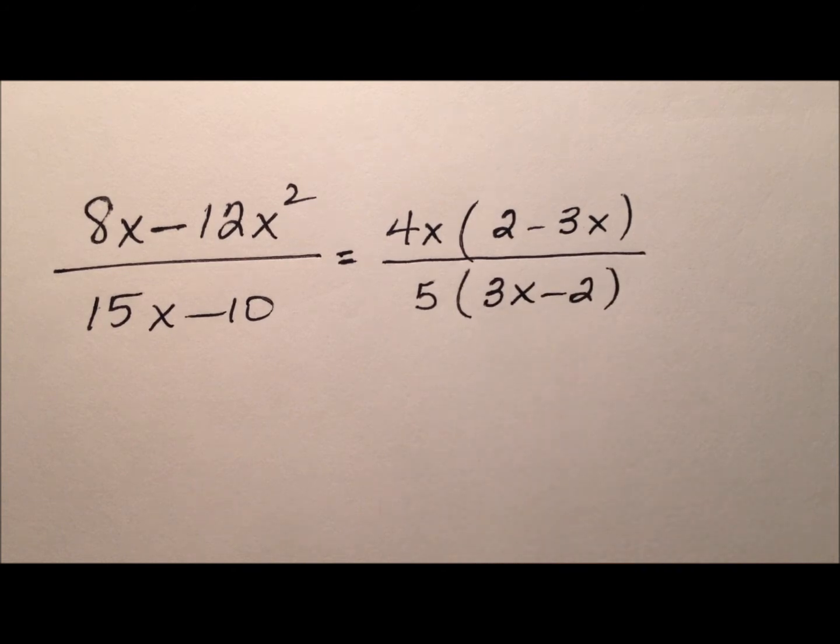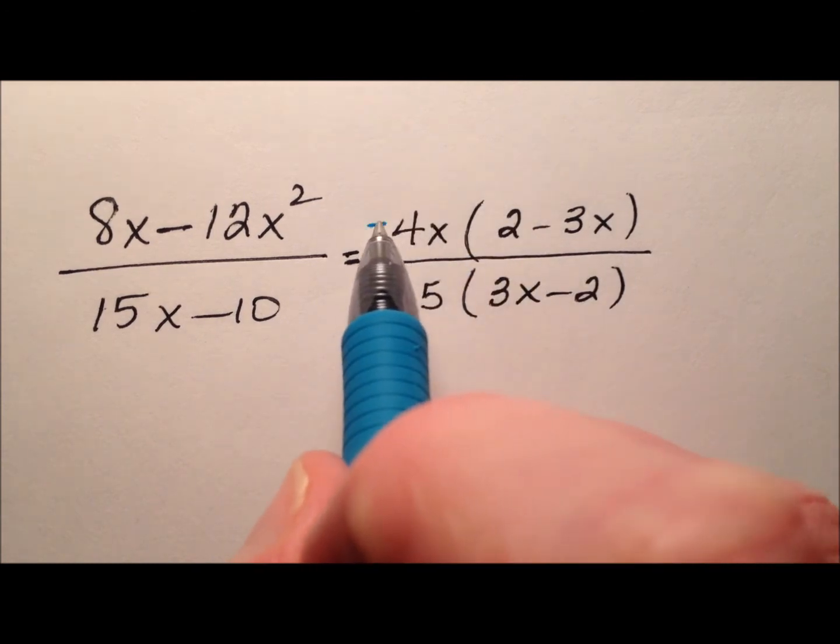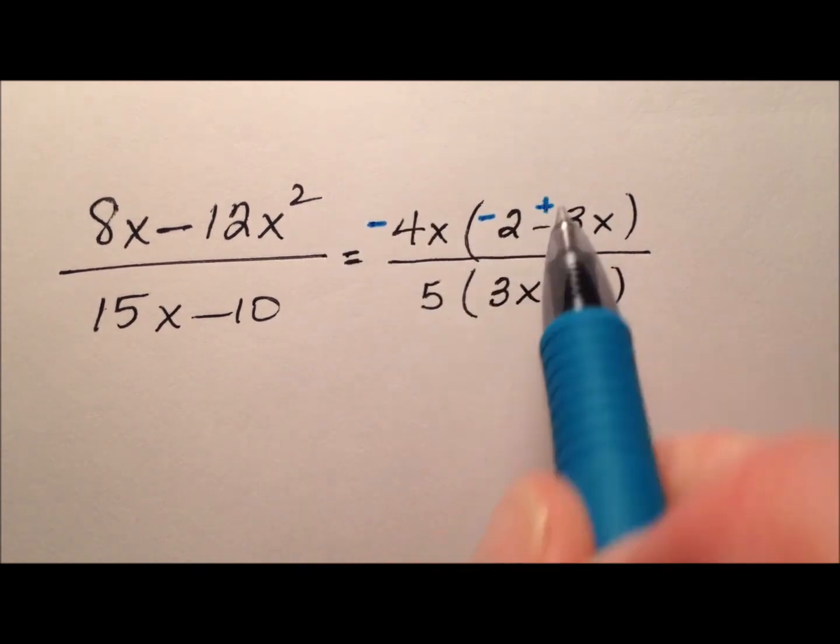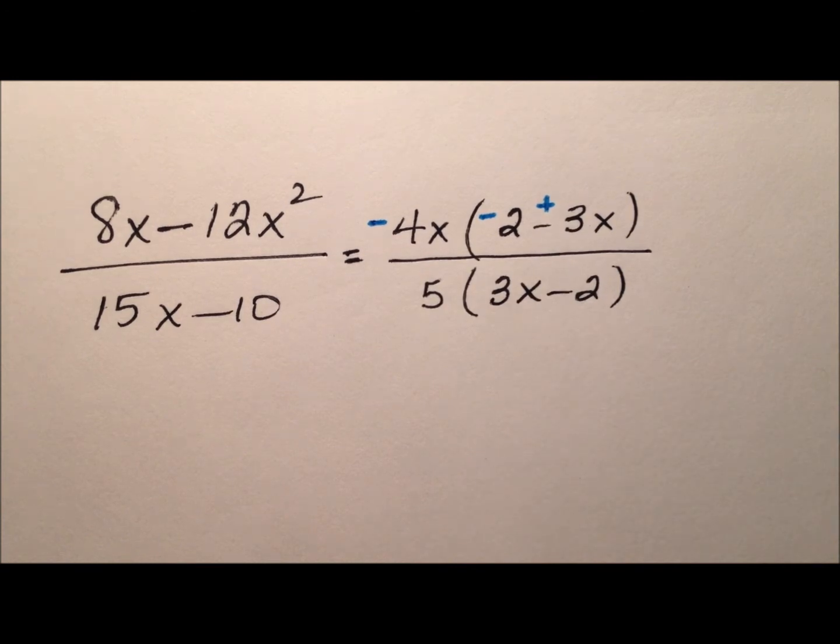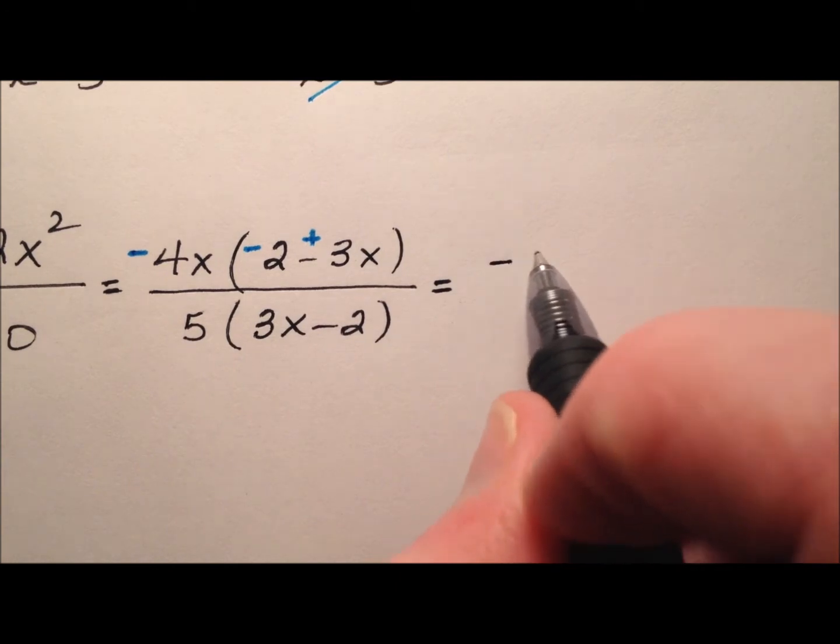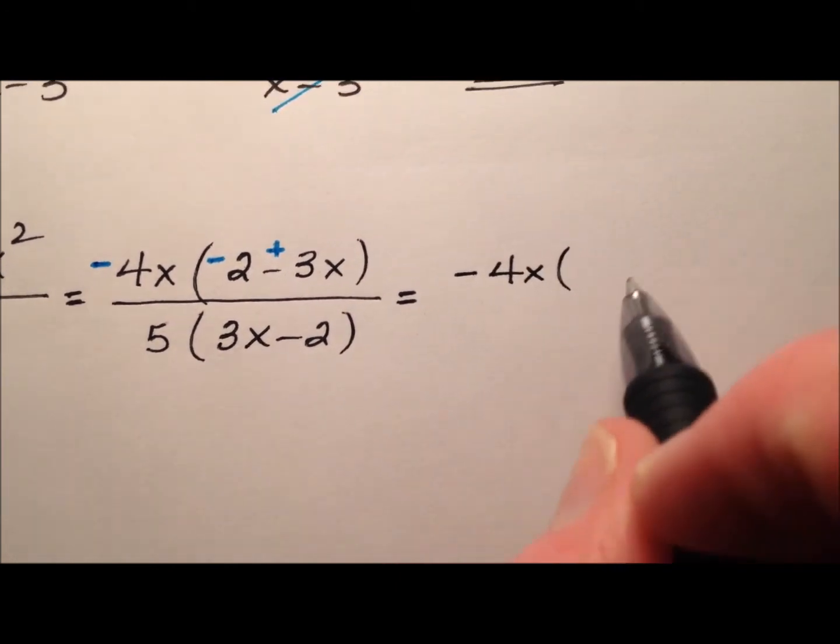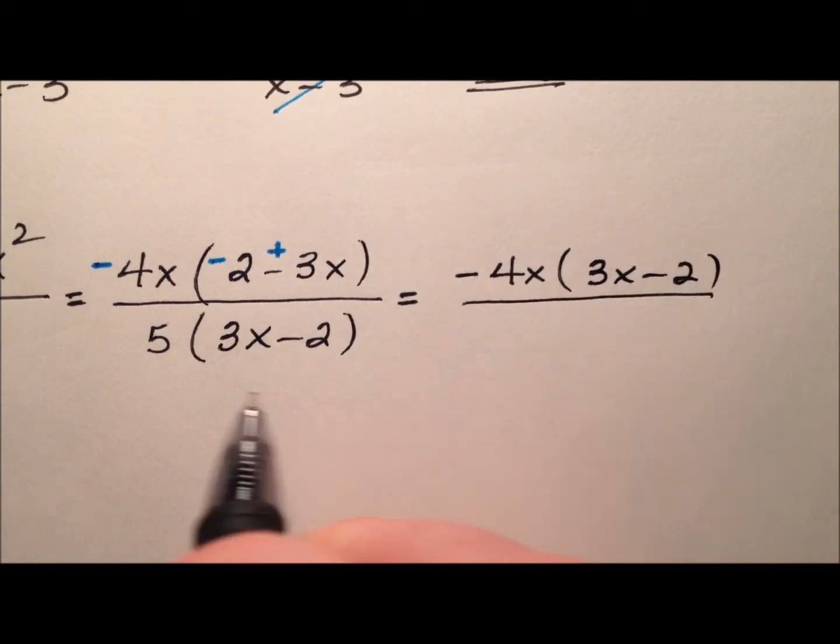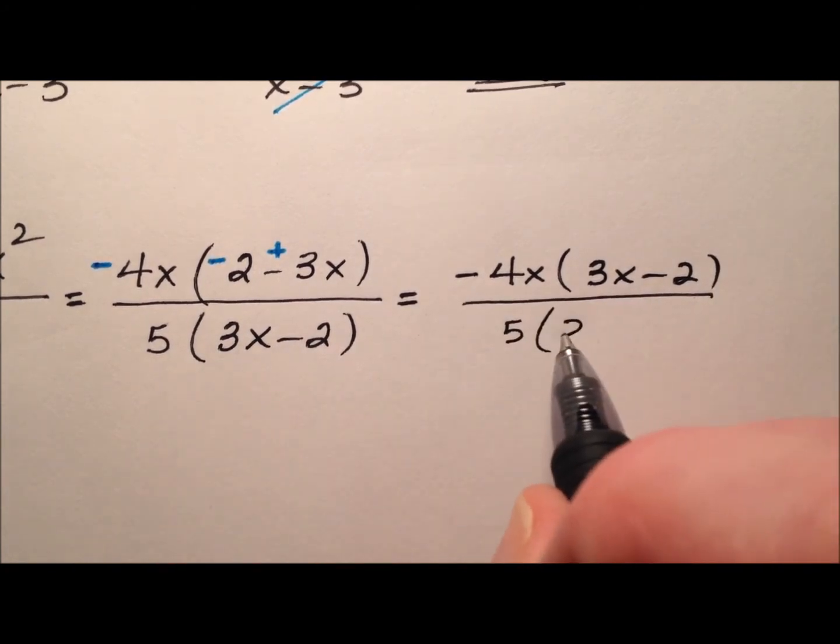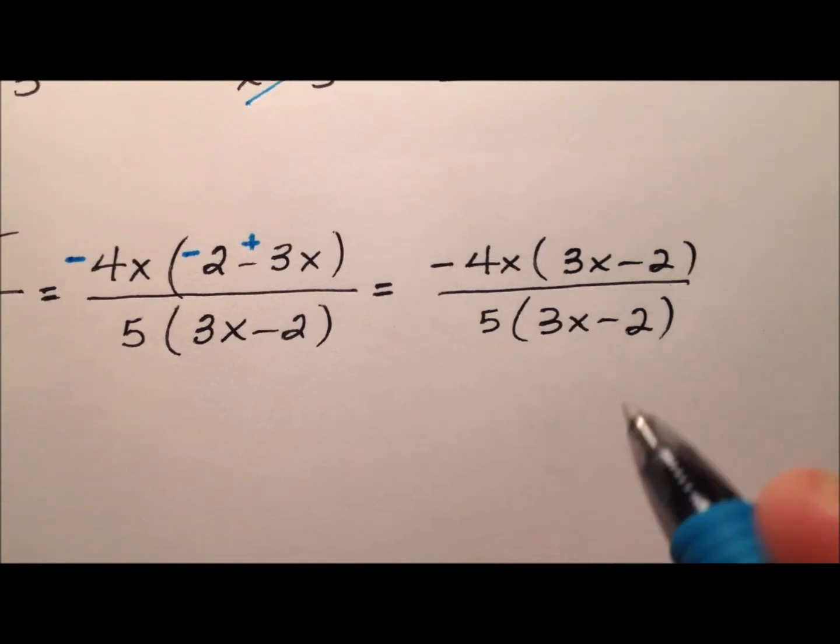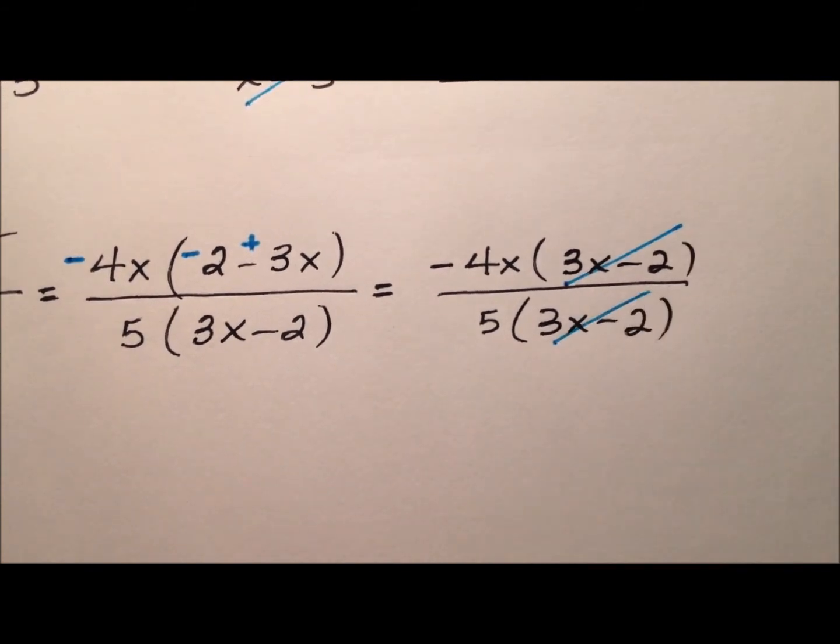So what we're going to do is factor out a negative which will change the sign of all of these things. So if I now switch the order, I actually factor out a negative 4x and then I have my 3x minus 2. And on bottom, 5 times 3x minus 2. So of course, now they will cancel out.